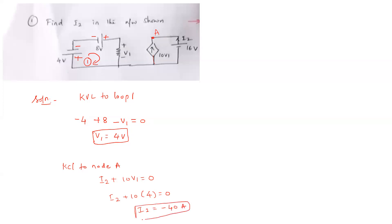Don't forget the units. So this completes the problem. We were asked to find the value of I2, and we have found it using KVL and KCL. I2 equals minus 40 amps. Now we'll move on to the next problem.